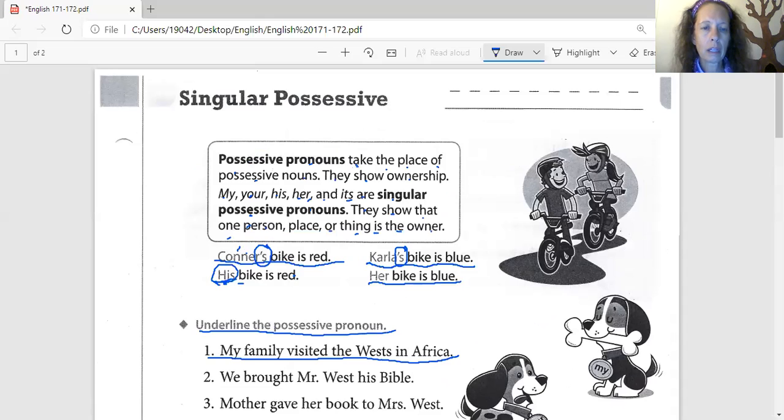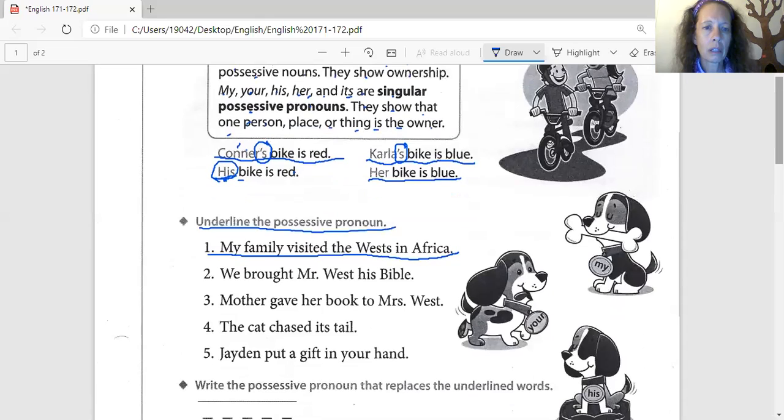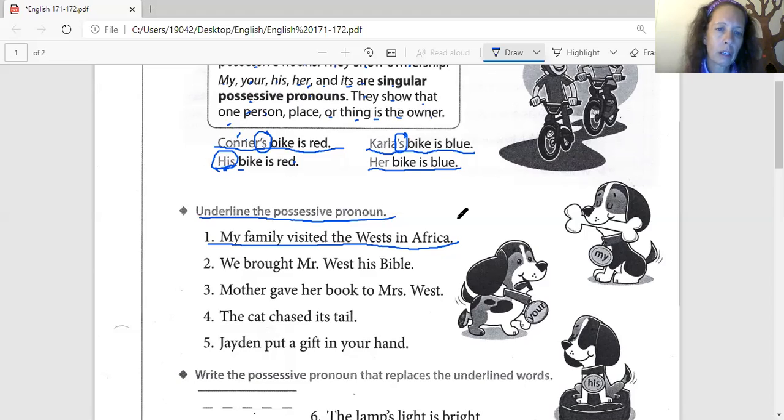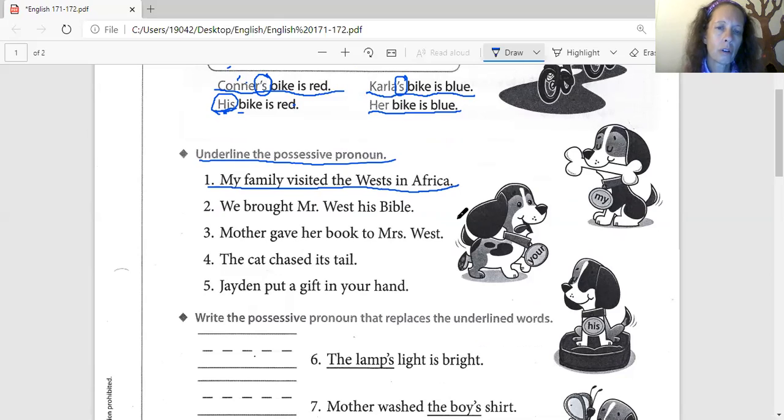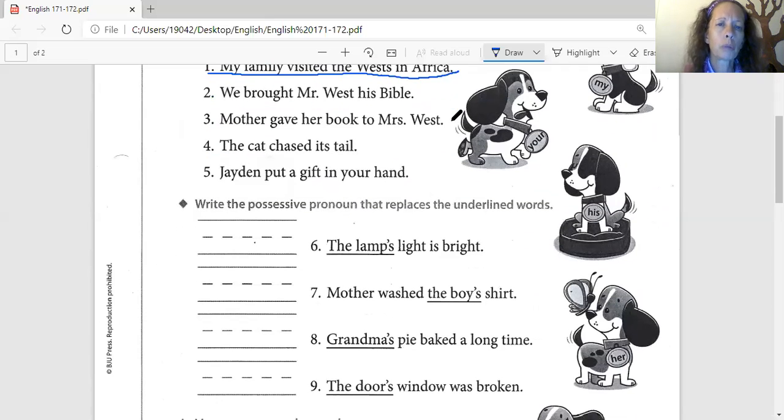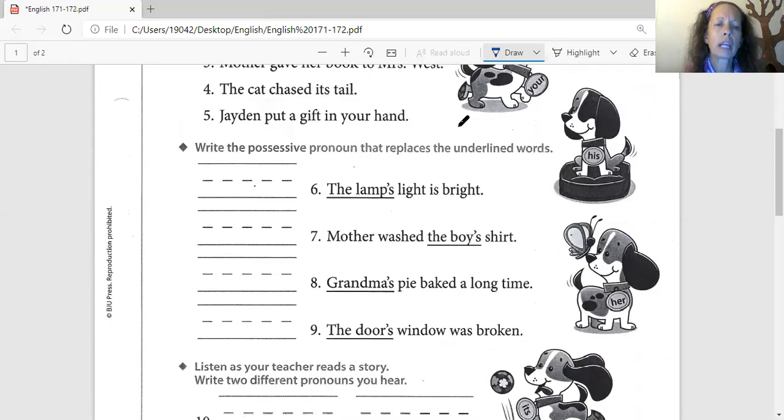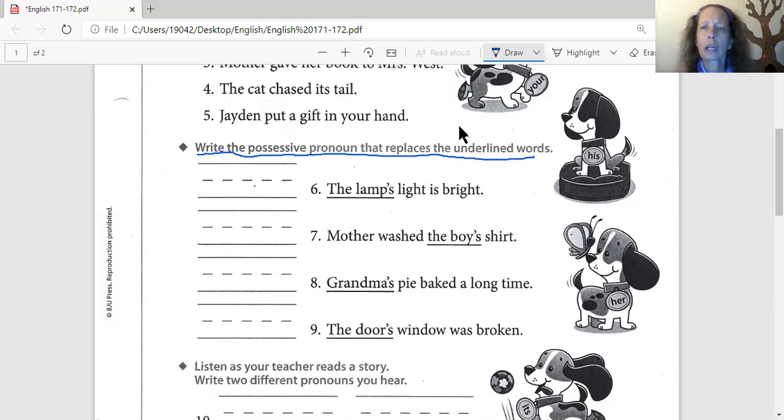It's not they. My family visited them. Them. Okay. Let me see if I can get. What's that? Ah. Visited them. Underline the possessive pronoun. I'm not clear on this. Hang on. Give it. I'm not sure about this. We brought Mr. West's Bible. Let's skip that one for now. For right now, that's plaguing me. We'll conquer that tomorrow. Let's go to the next part.